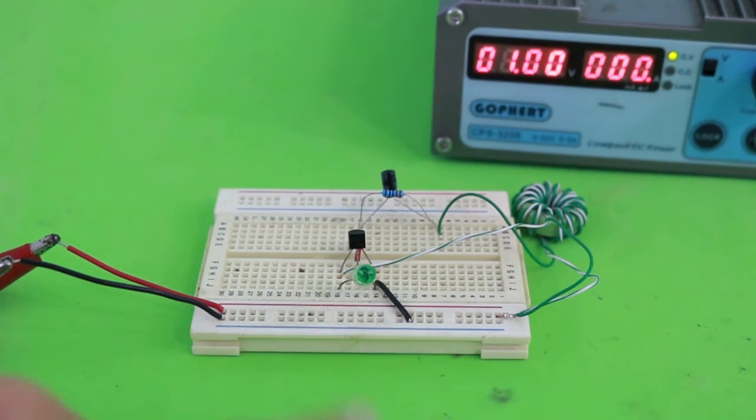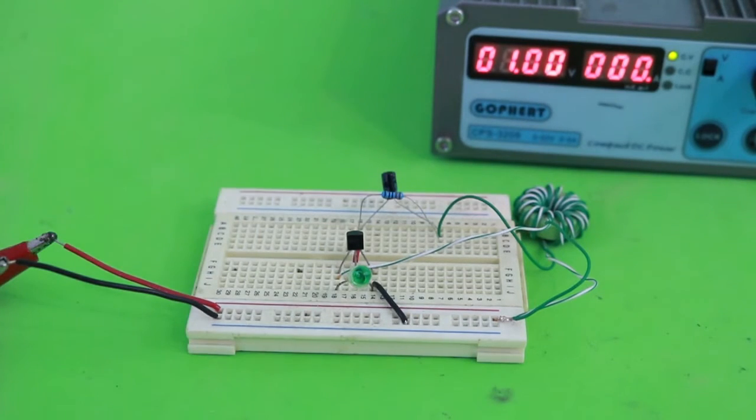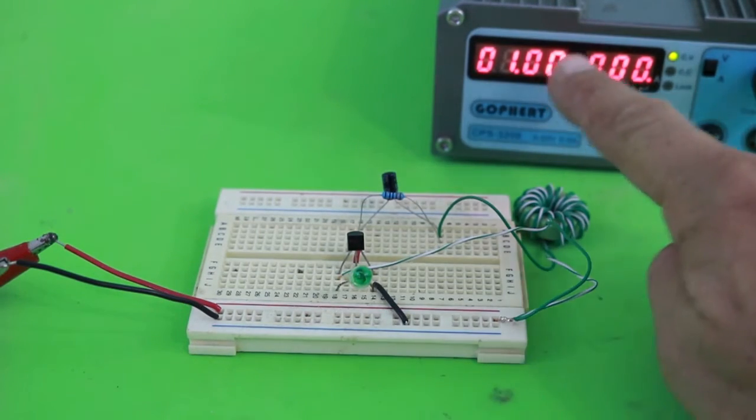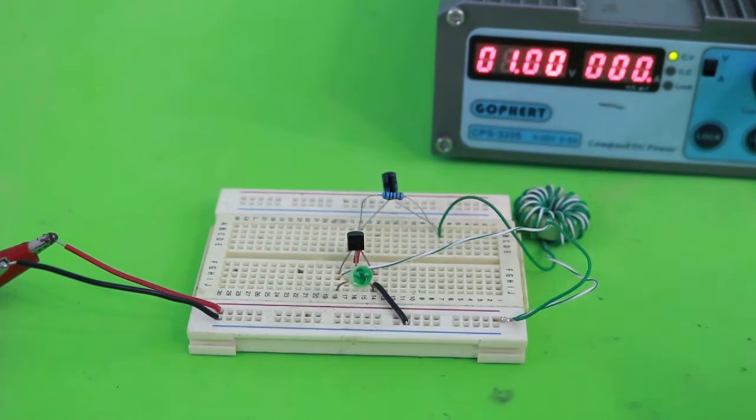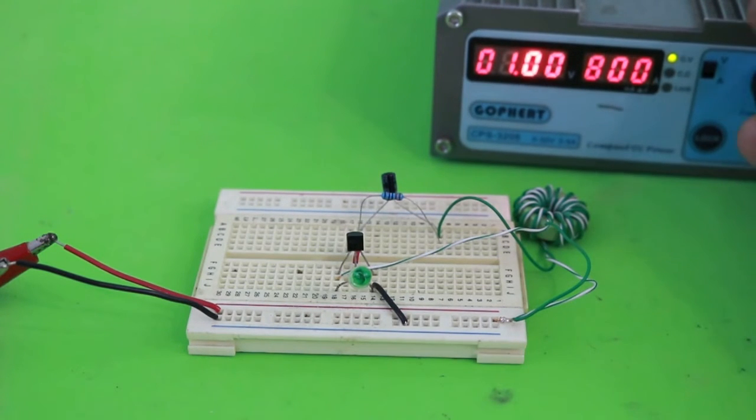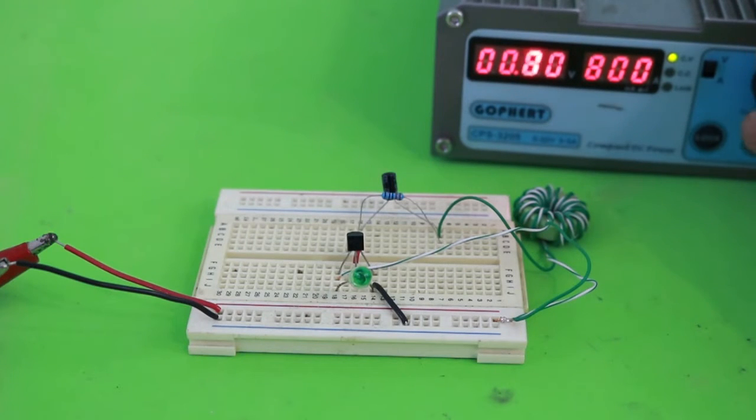The frequency of the blinking in the LED depends on several factors. One of them is the voltage. With less voltage, the frequency goes down and vice versa. Let's use 0.6 volts, and you can see how the LED is blinking at a slower pace. More voltage and the frequency goes up.